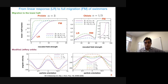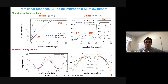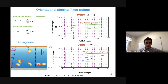For oblate swimmers, when we increase the field past a certain threshold, there are two stable fixed points: one representing swimmers moving upward and upstream, and the other representing swimmers moving downward and upstream. When we increase the field further beyond another threshold, there is only one stable fixed point, representing swimmers moving slightly upstream and towards the lower wall.